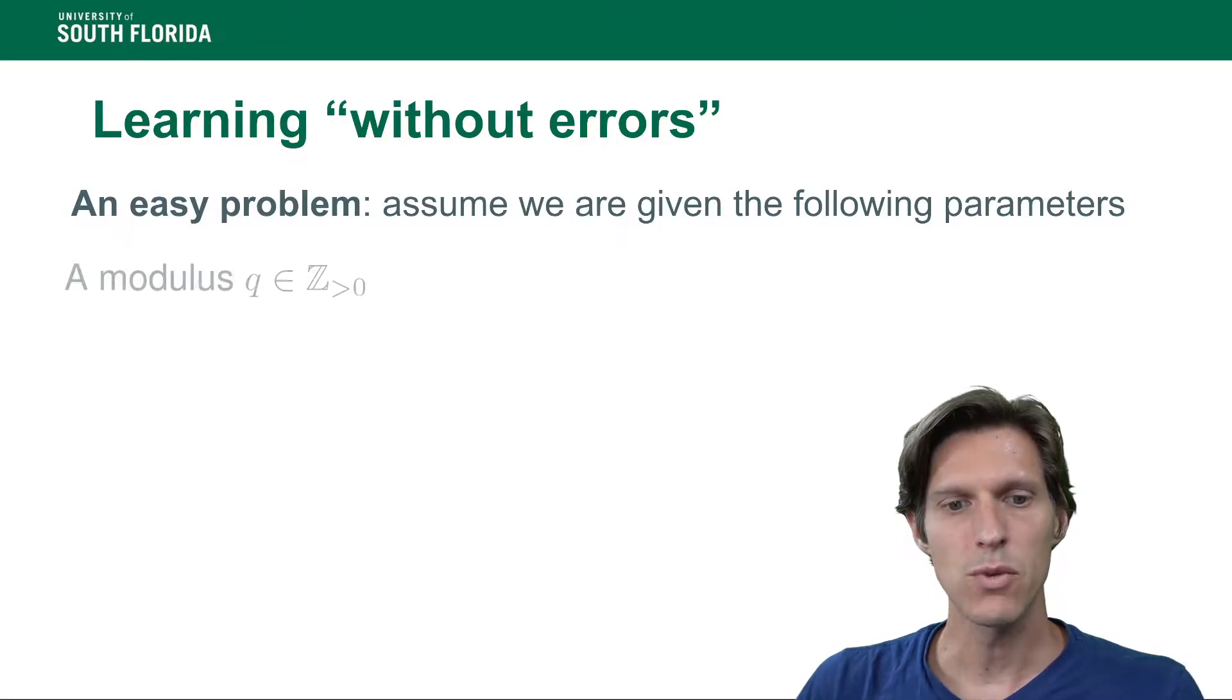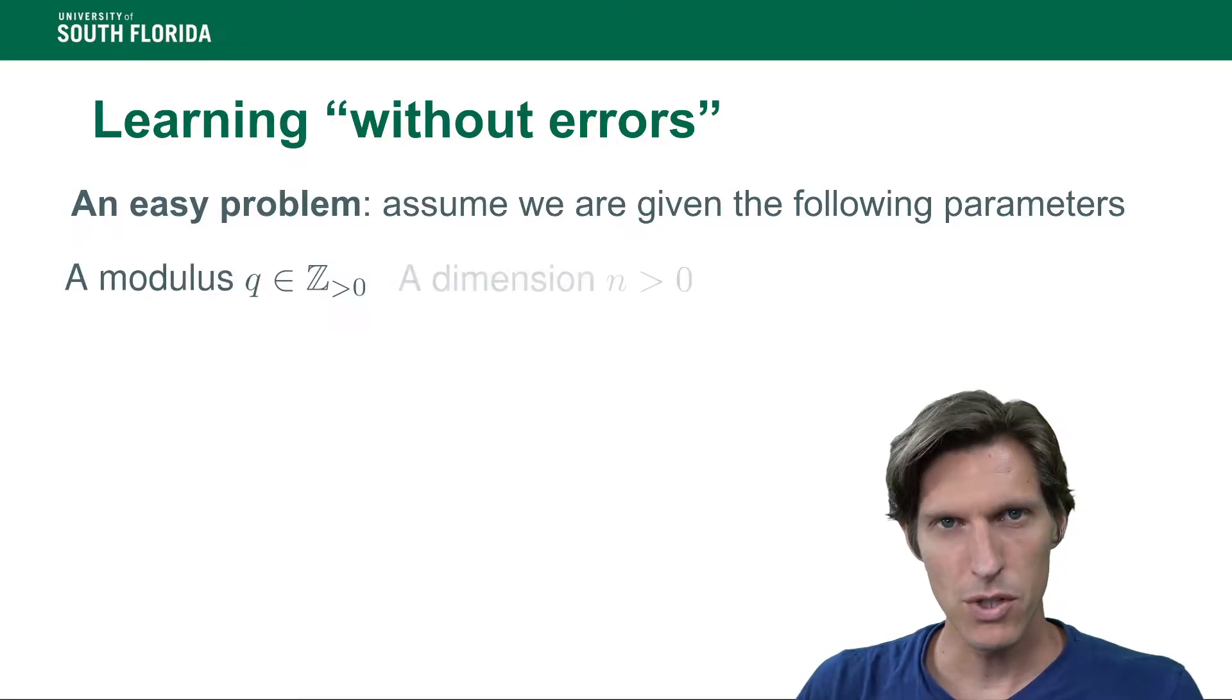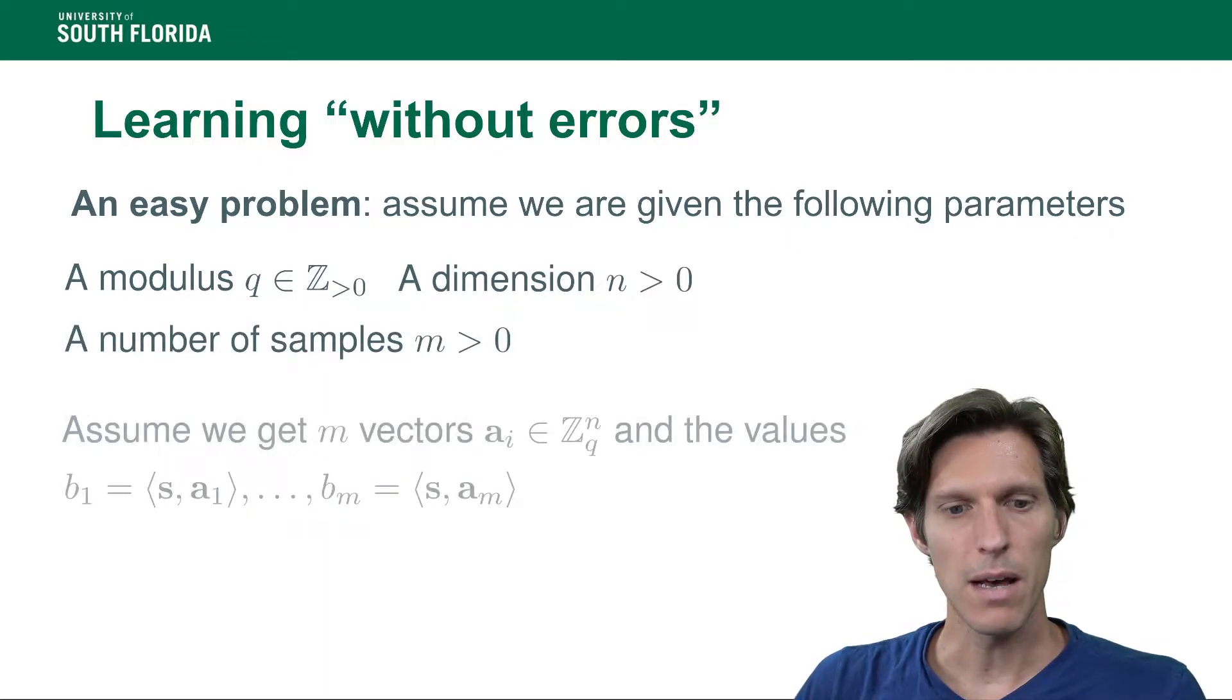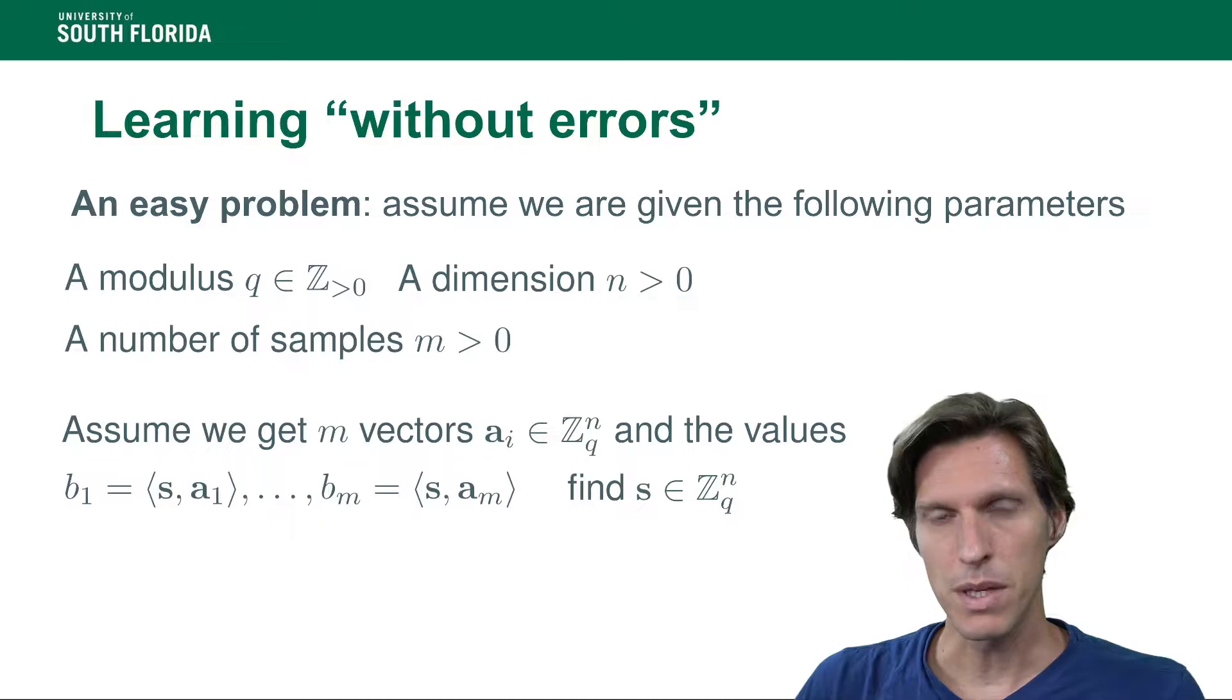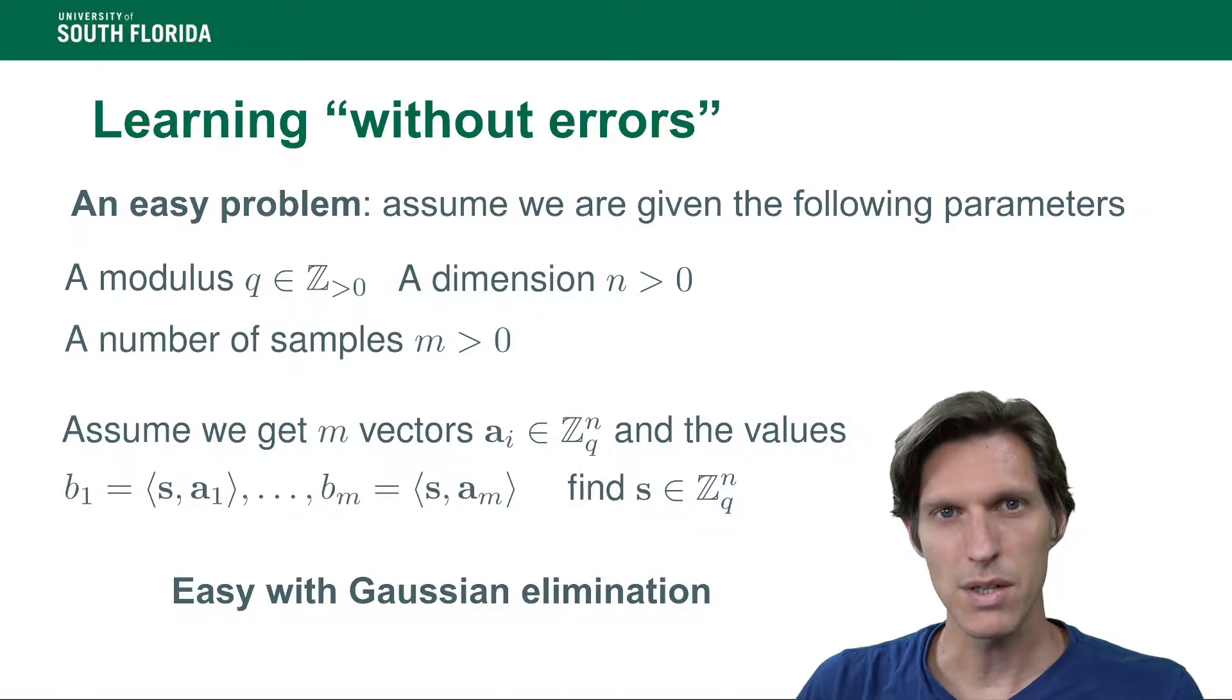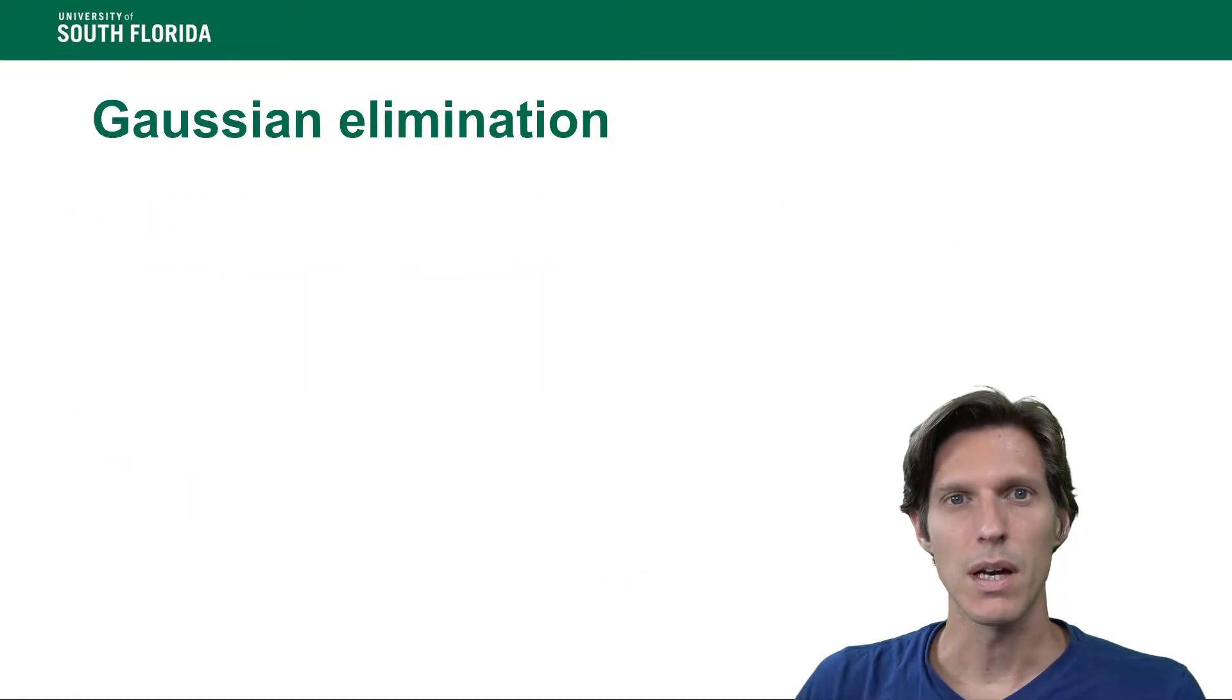We assume that we're given the following parameters: a modulus q, a dimension n, and a number of samples m of the form, the inner product between some ai's, vectors of dimension n over zq, and a secret s. The problem is to find s. This is not a hard problem because Gaussian elimination tells us how to do this. Let's give a few details about Gaussian elimination as this will be useful for other lectures that we have coming up.